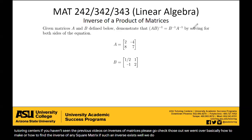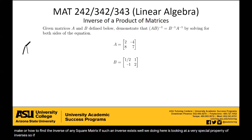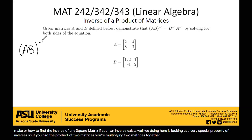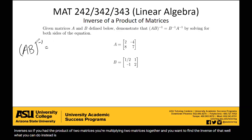What we'll be doing here is looking at a very special property of inverses. So if you had the product of two matrices, you're multiplying two matrices together, and you want to find the inverse of that, well what you can do instead is find the inverse of each matrix and multiply them together, but do it kind of backwards.